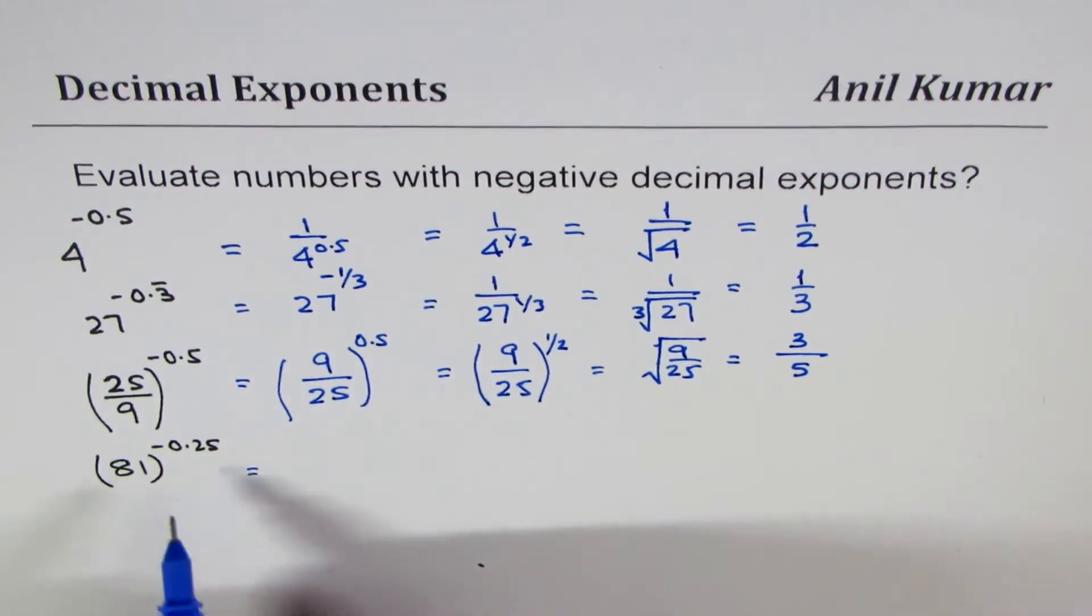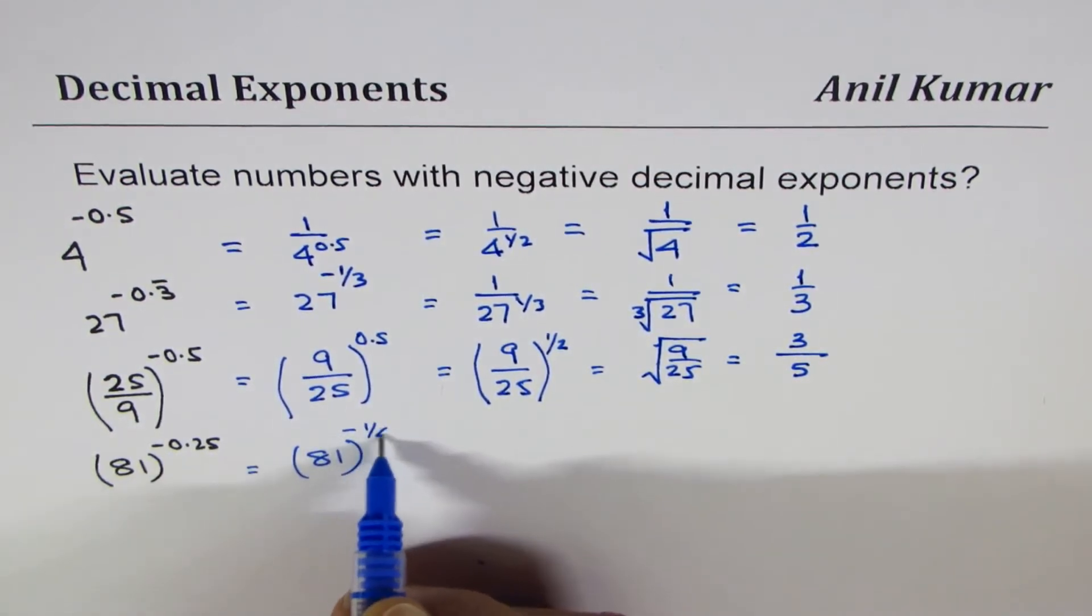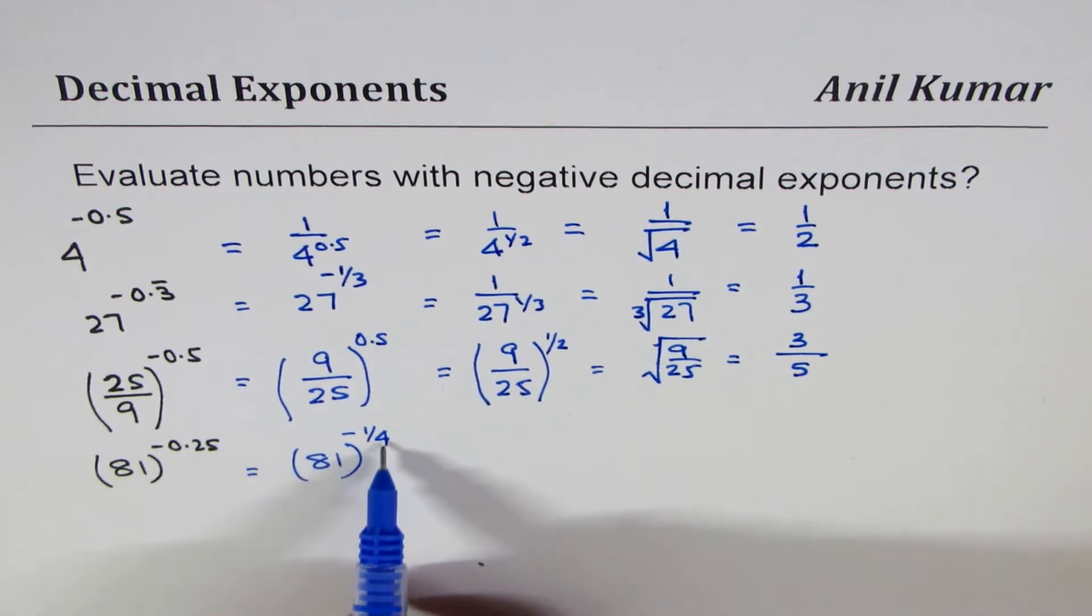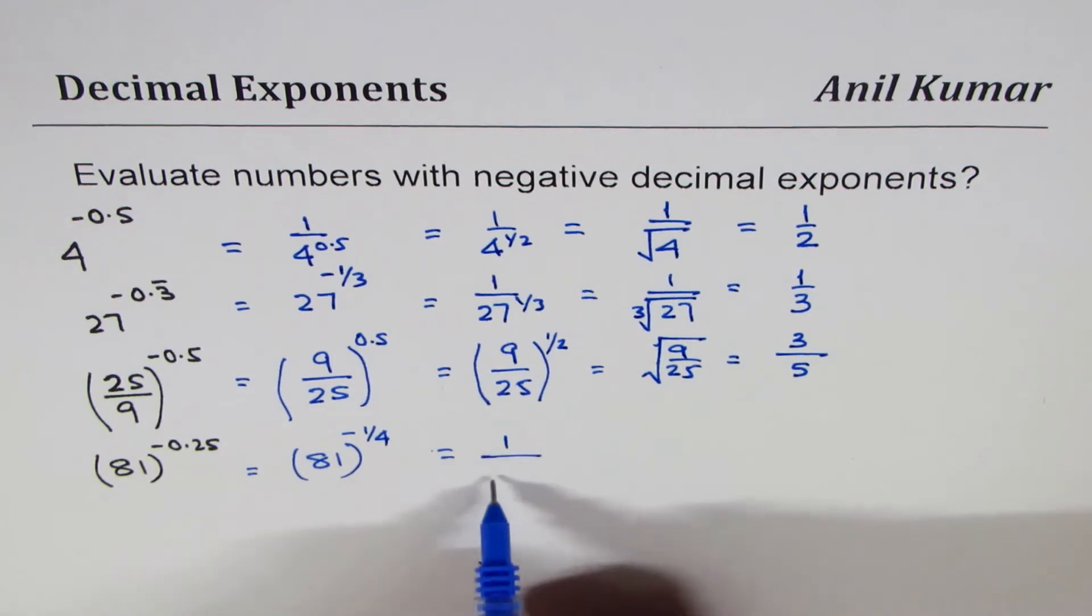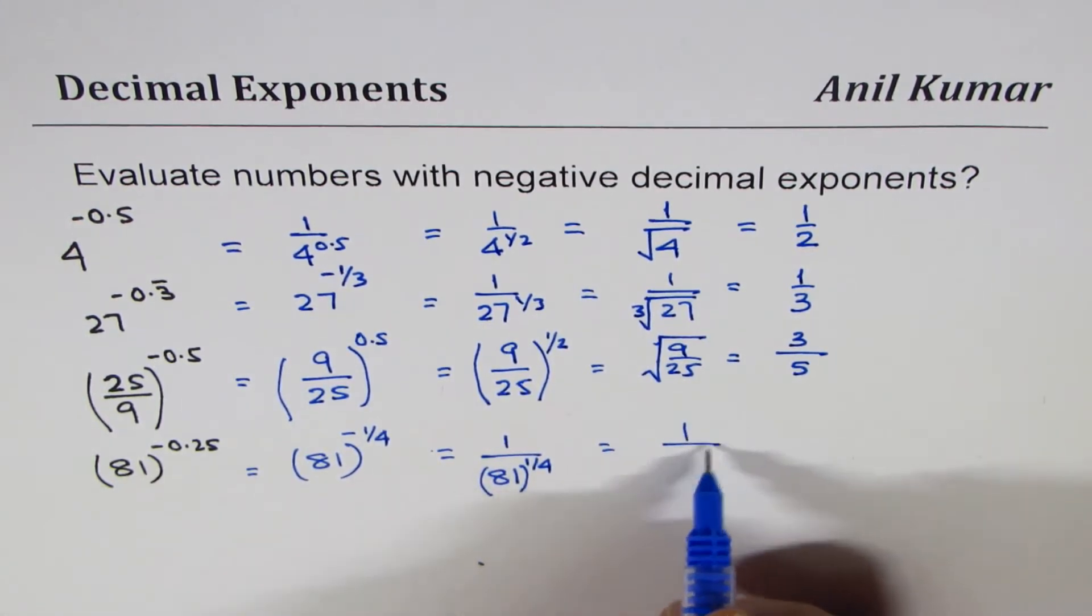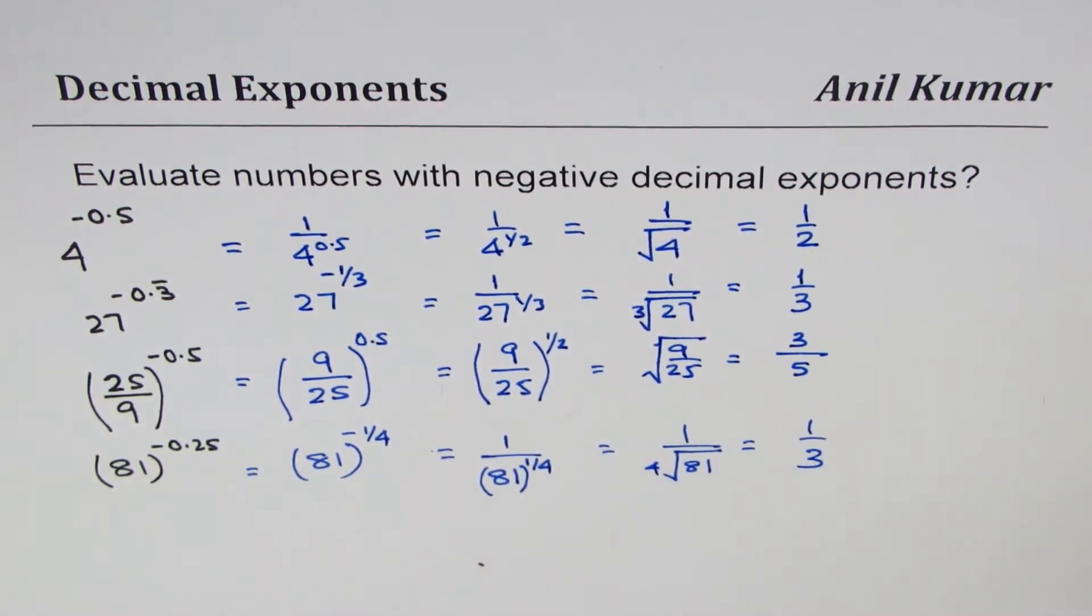The next one here is 81 to the power of minus 0.25. Minus 0.25 means minus 1 over 4. So we are looking for fourth root of 81 reciprocal. So I could write this as 1 over 81 to the power of 1 over 4. So that is 4th root of 81, which is 3. So that is how you could actually solve or evaluate these functions.